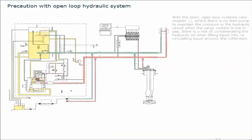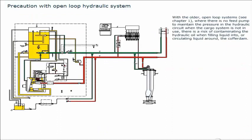With the older, open-loop systems, where there is no feed pump to maintain the pressure in the hydraulic circuit when the cargo system is not in use, there is a risk of contaminating the hydraulic oil when filling liquid into, or circulating liquid around, the cofferdam. In such systems, it is important that the hydraulic oil return pressure is always higher than the pressure in the liquid-filled cofferdam.